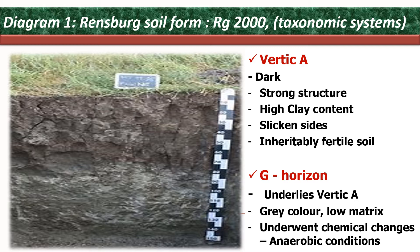The soil underwent chemical changes in the presence of more water and no air, so anaerobic conditions persisted — evident by the presence of low matrix color, blue and green tints, and gray colors. Using the two classification books of South Africa, namely the Taxonomic System of South Africa 1991 and the Environmental and Anthropogenic System of South Africa 2018, the soil diagnostic horizon gave rise to the Rensberg soil form. With RGA 2000, it is a soil family because the upper horizon had the dominance of lime nodules, making the topsoil calcareous.